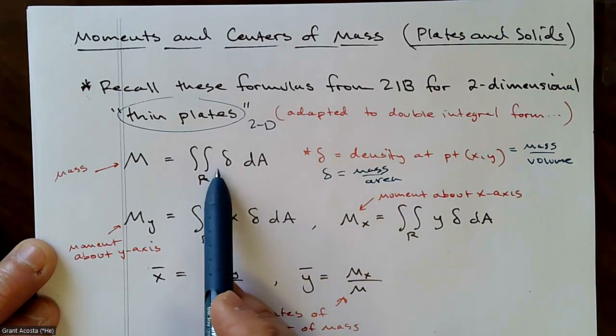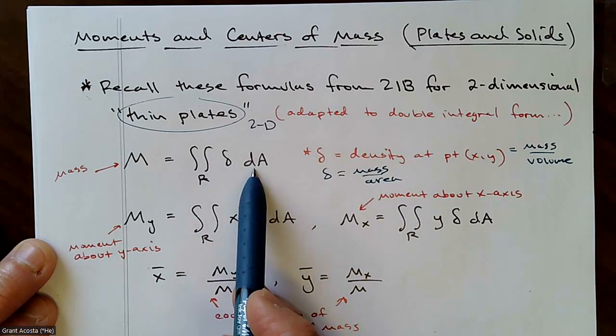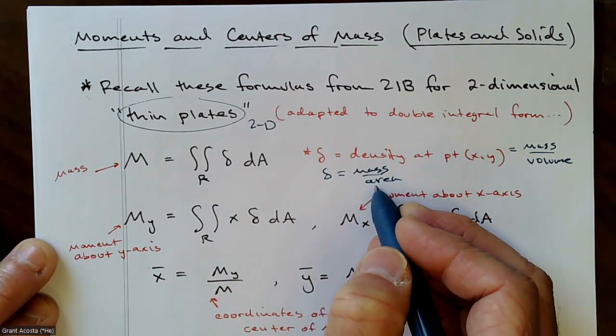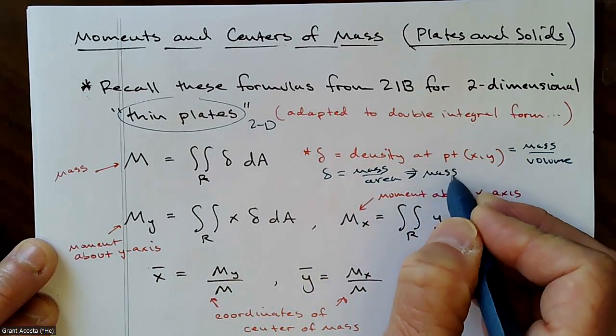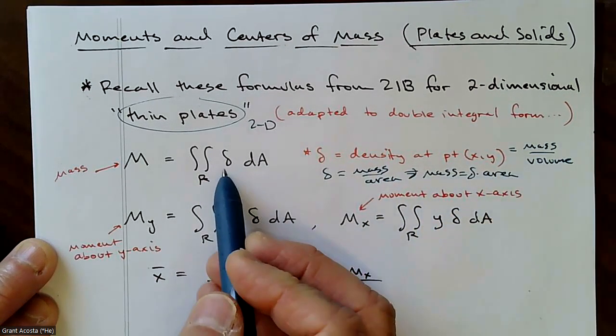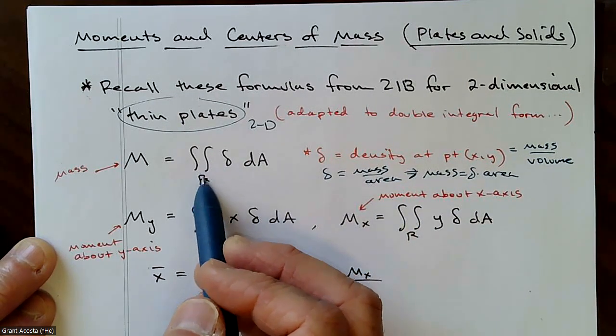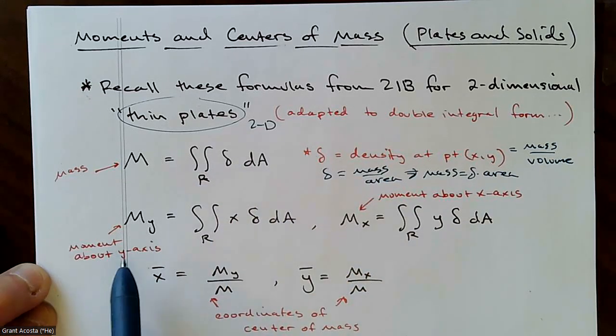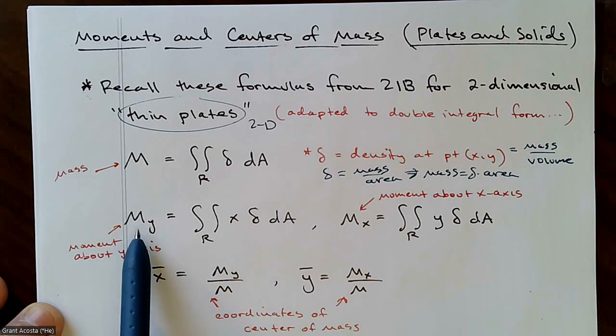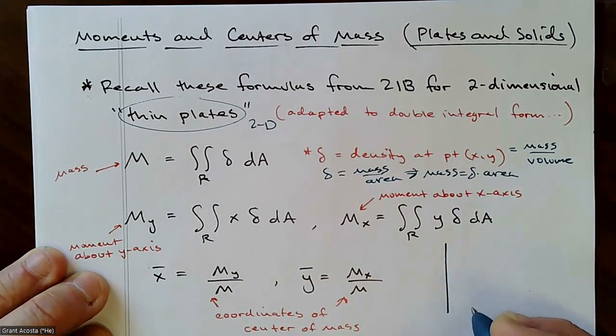Again, that doesn't really make sense in the real world, but we'll just use that idea and extend it when we start talking about actual three-dimensional solids. So for mass, you want to add up for every point in your region, the density times the area, because if density is mass divided by area, then mass is density times area.